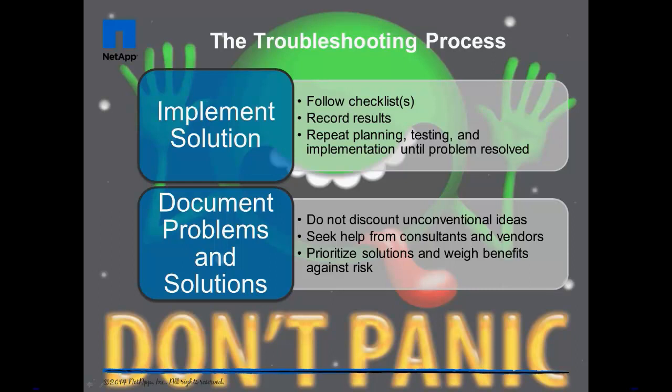Implement the solution. With checklists in hand and positive test results, begin systematically resolving problems and verifying symptoms disappear. Watch the Install 100 video for tips on creating checklists. Document the problems and solutions for fixing them. This may not be the end of the problems. Your solutions may turn out to be temporary band-aids. Sometimes the environmental conditions which create the problems go away and are the real cause of the problems disappearing, not the actions you've taken.